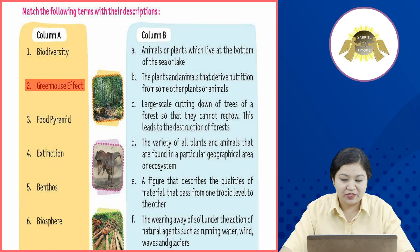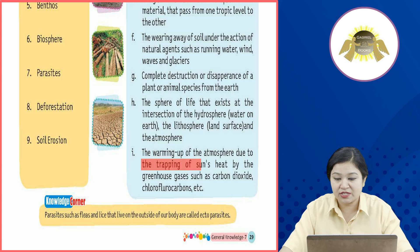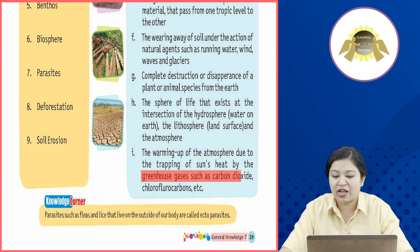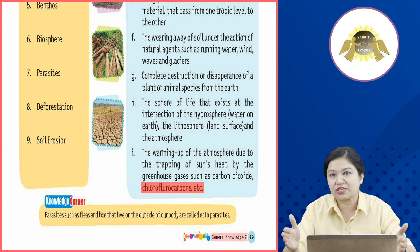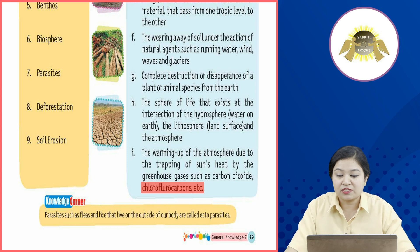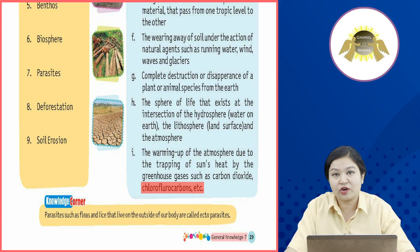Second: Greenhouse Effect. This is the warming up of the atmosphere due to the trapping of the sun's heat by greenhouse gases such as carbon dioxide, chlorofluorocarbons, etc. Here you have a box — a place — where the sun's heat is trapped by greenhouse gases like carbon dioxide and chlorofluorocarbons.